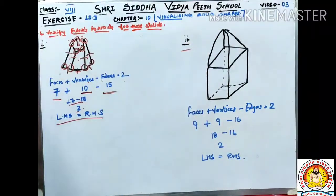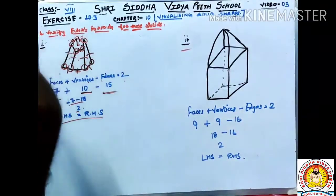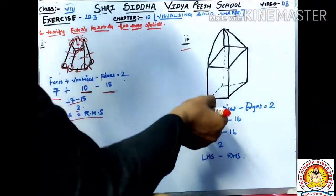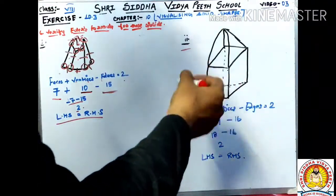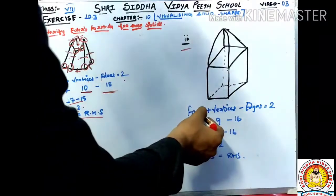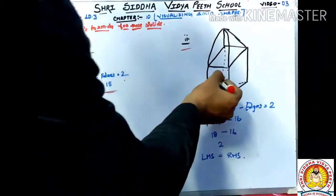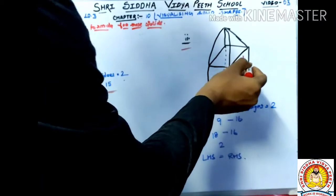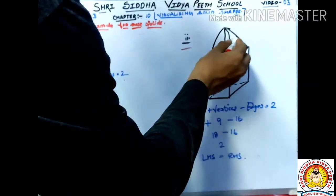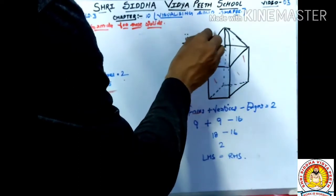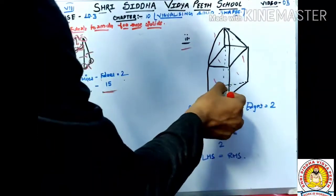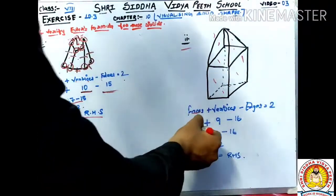Now we look at the second figure and apply the same formula — Faces plus Vertices minus Edges equals 2. Counting the faces of the second figure: this side is 1, this side is 2, this side has 4 faces, the opposite side also has 4 faces, and the base is 1 face — so there are 9 faces in total.